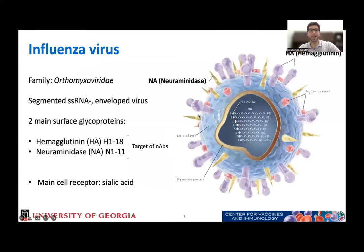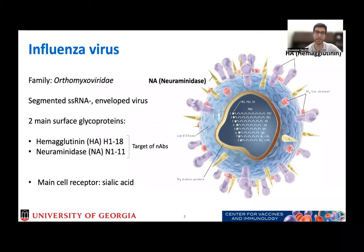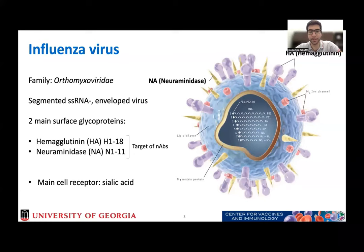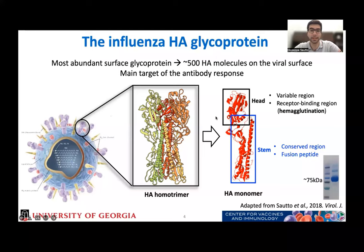Influenza virus belongs to the family Orthomyxoviridae. It has a segmented single-strand RNA of negative sense, and it's an enveloped virus in which we have on the envelope two main surface glycoproteins: one is the hemagglutinin and the other is the neuraminidase, and these two proteins are the main target of neutralizing antibodies. The main cell receptor of the virus is the sialic acid. Hemagglutinin is one of the most abundant surface proteins — we have about 500 HA molecules on the virus surface — and it's also the main target of the antibody response.